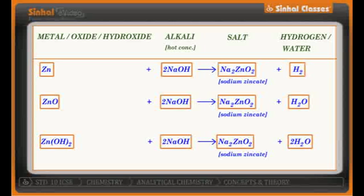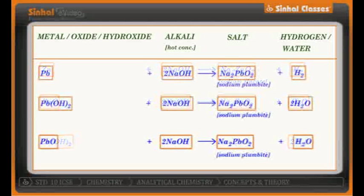Now let's take one more metal — lead Pb — again treated with the same alkali NaOH. You will get sodium plumbite, that is Na2PbO2. Whenever an alkali is treated with a metal, it will always give you hydrogen gas.